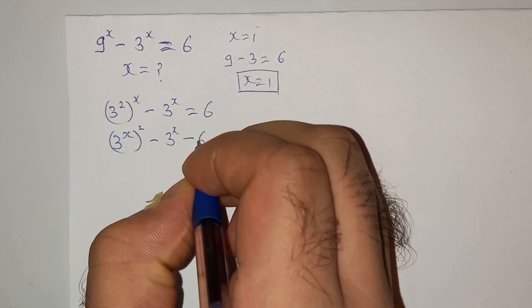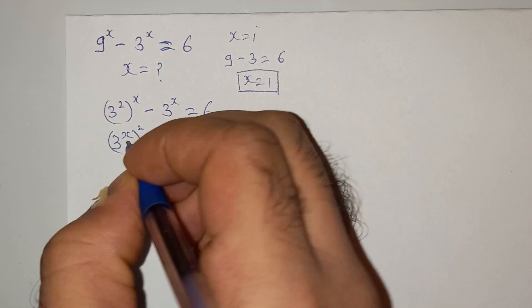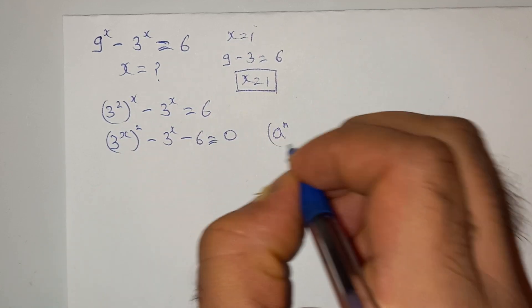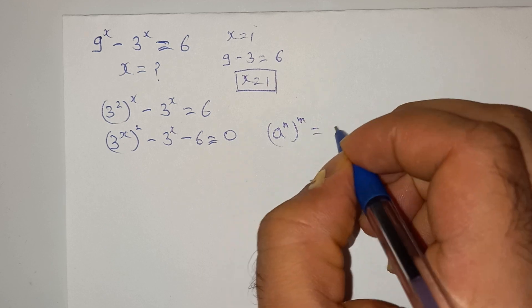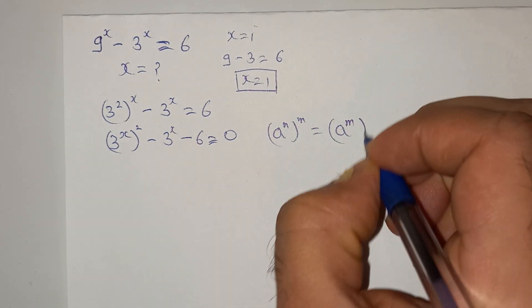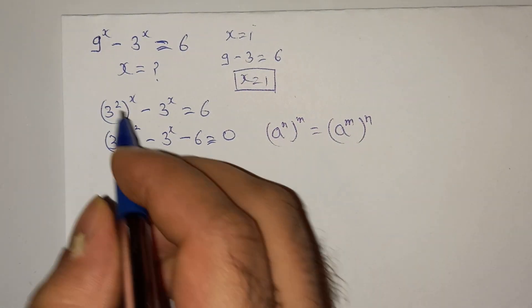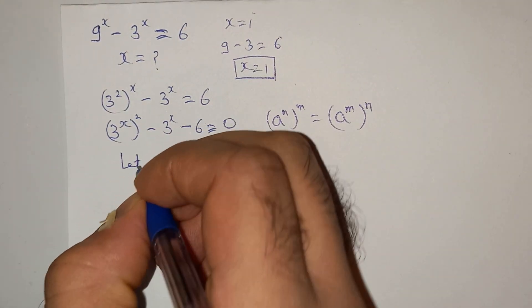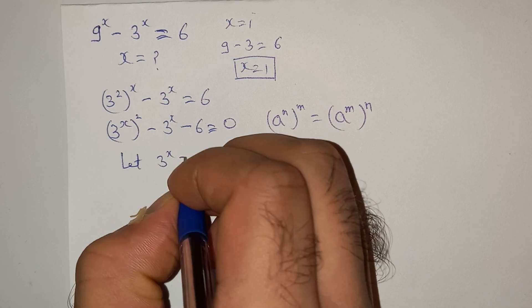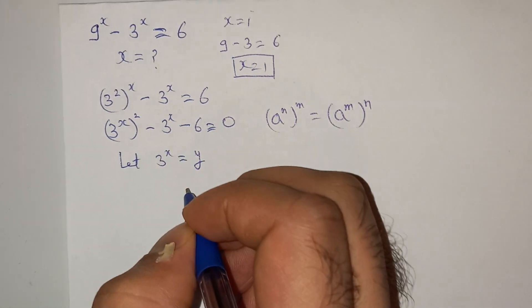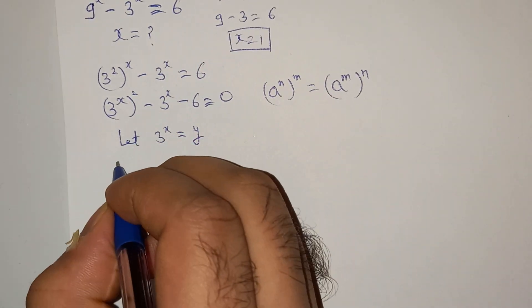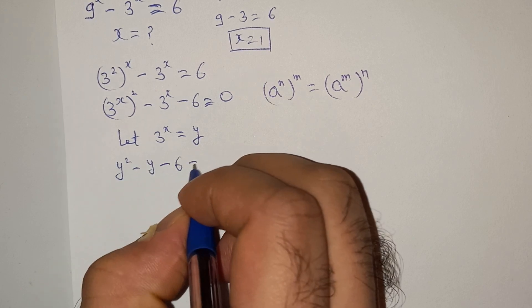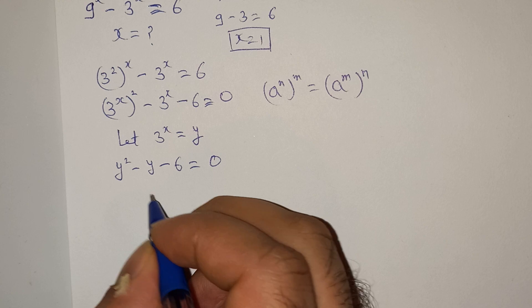So basically I have used this exponential rule, which is a power n power m equals to a power m power n for this one. All right, so let us take 3 power x equals to y. So this will be y square minus y minus 6 equals to 0.